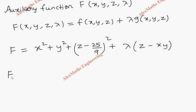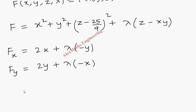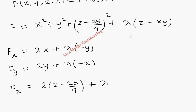Now we find the partial derivatives. Fx = 2x + λ(−y). Fy = 2y + λ(−x). Fz = 2(z−25/9) + λ. As per the working procedure, we equate all three to zero and solve for λ.